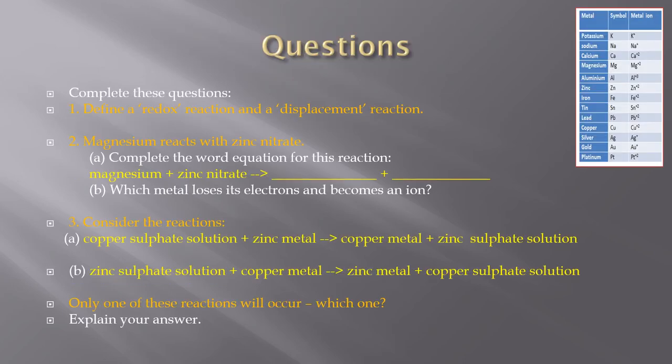Righto, a few questions for you to go. Define a redox reaction and a displacement reaction. Displacement means we are displacing one atom with another. And in a redox reaction, it is a solid metal that is reacting and going into solution, being displaced by a metal that's in solution that becomes a solid. The redox part means one atom will be oxidized or lose electrons and go into solution. The other one is reduced or gain electrons and become the solid.